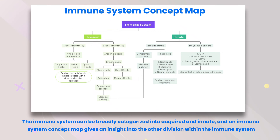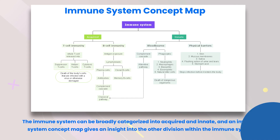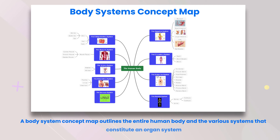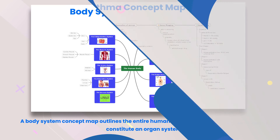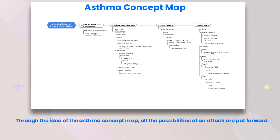Immune system concept map: the immune system can be broadly categorized into acquired and innate, and an immune system concept map gives insight into the other divisions within the immune system. Body systems concept map: a body systems concept map outlines the entire human body and the various systems that constitute an organ system.